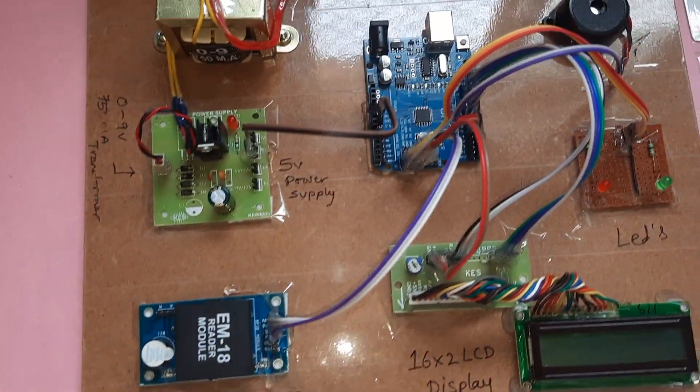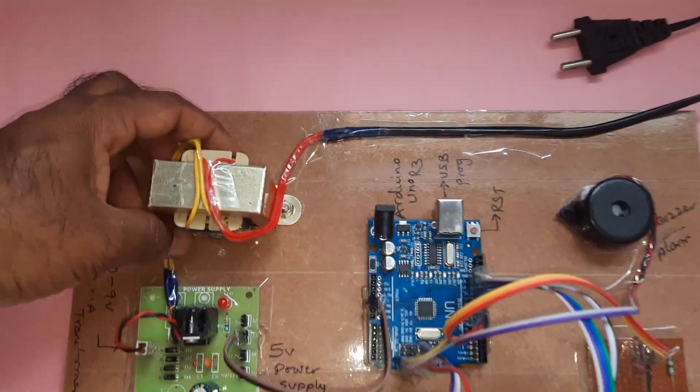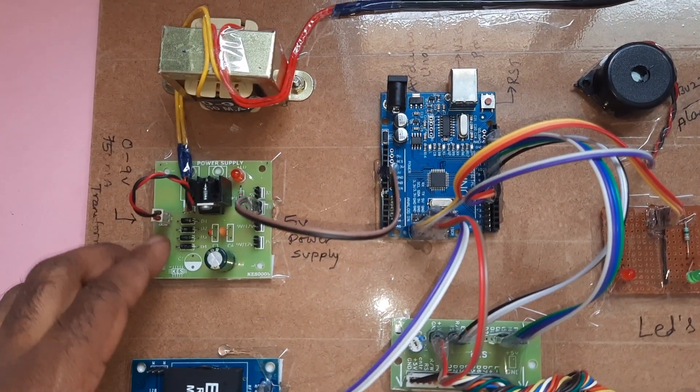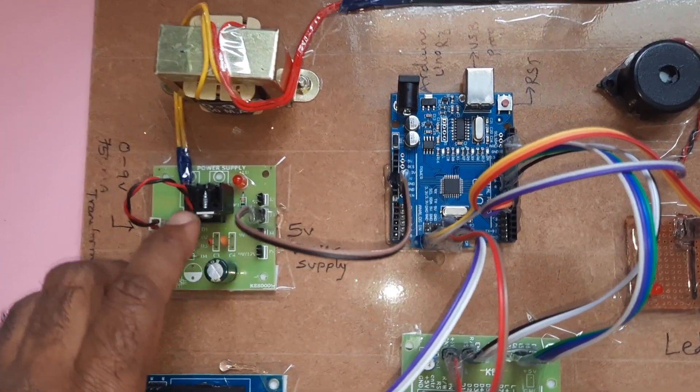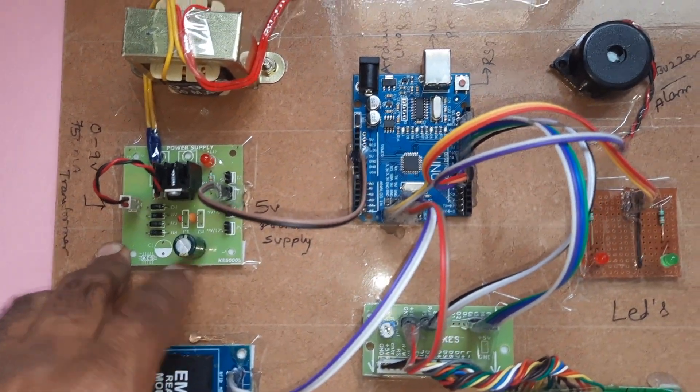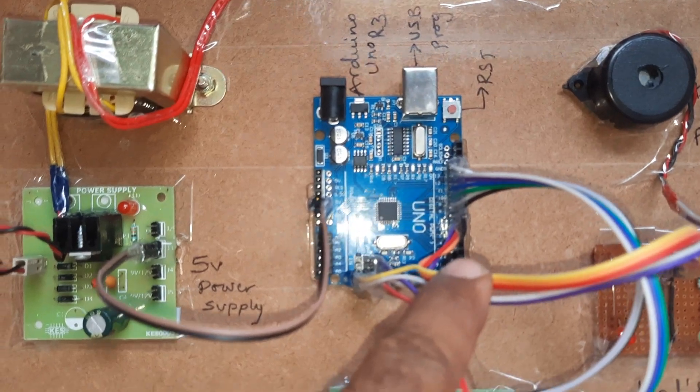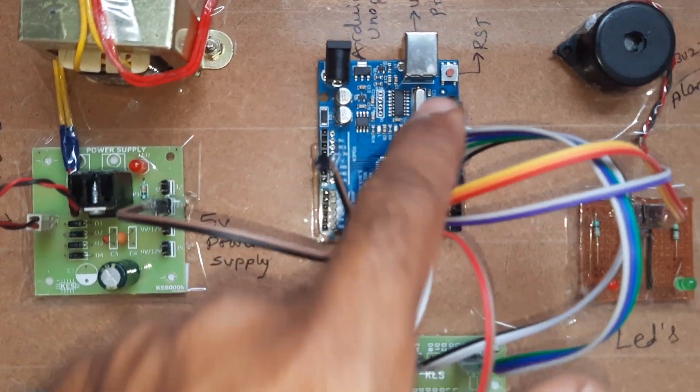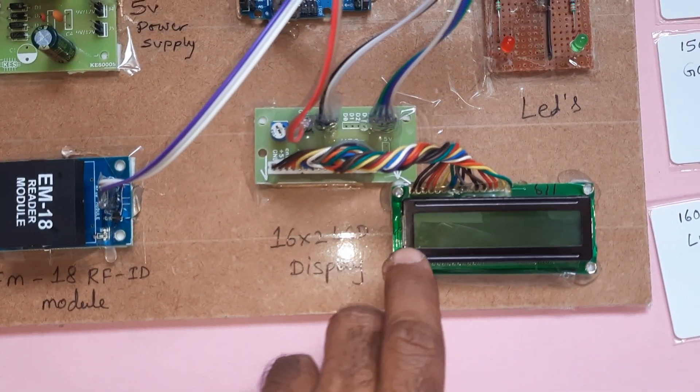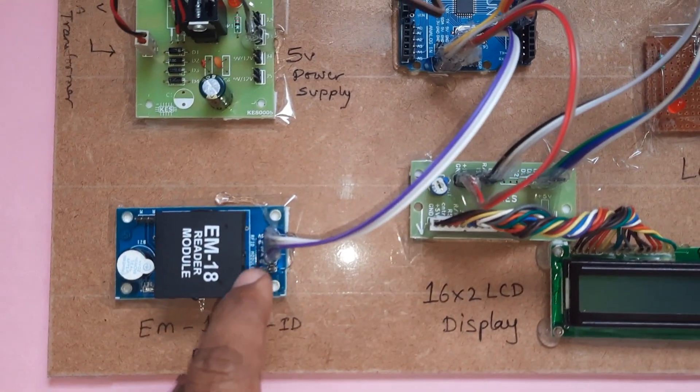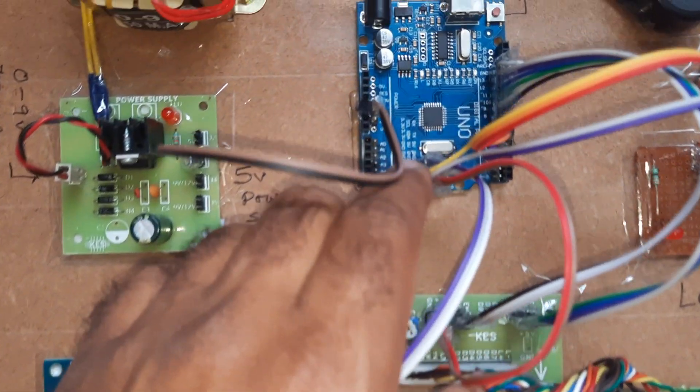Coming to the hardware: 230 volt input, step down transformer, 9 volt output AC, bridge rectifier, filter capacitor, 7805 regulator, one LED, 5 volt power supply module. Arduino Uno R3 board with pins 8, 9, 10, 11, 12, 13 connected to 16x2 LCD display. EM18 RFID module transmitter goes to receiver.